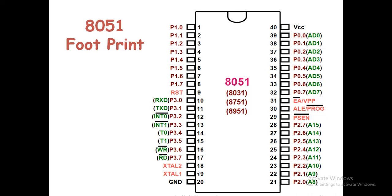The next important pin is the RST (reset) pin. Pins 29, 30, and 31 we are not going to use in this lecture series because we are not interfacing external memory. One more important thing is the EA pin — you usually connect EA to VCC because we are using the internal program memory for our application code. If EA pin equals 0, the program has to be stored in external memory.